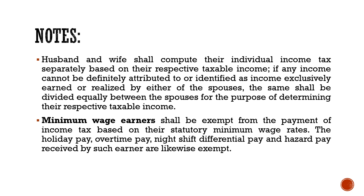Under the Train Law, meron tayo yung mga items to take note. First, husband and wife shall compute their individual income tax separately based on their respective taxable income. If any income cannot be definitely attributed to or identified as income exclusively earned or realized by either of the spouses, the same shall be divided equally between the spouses for the purpose of determining their respective taxable income. Next, kapag ikaw ay identified as minimum wage earner, then you shall be exempted from payment of income tax — this is based on their statutory minimum wage rate. Correspondingly, the holiday pay, overtime pay, night shift differential pay, and hazard pay received by such earner are likewise exempt.